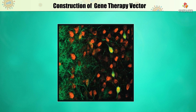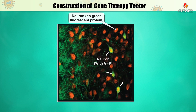This micrograph depicts neuronal cells that have integrated and expressed the green fluorescent protein. Neurons are identified by a red fluorescent antibody specific for a neuronal protein. Neuronal cells that also express the green fluorescent protein from the transgene glow green, although the combination of red and green produces a yellowish color.